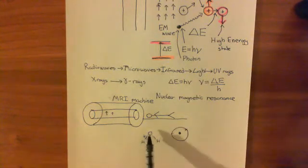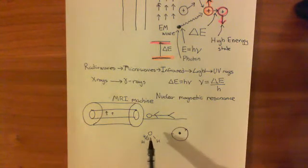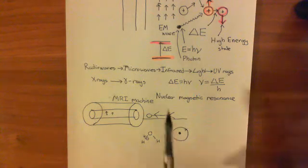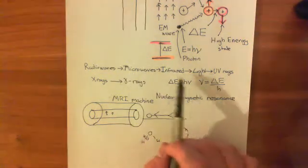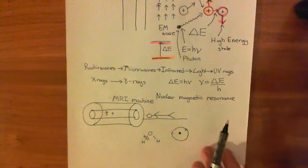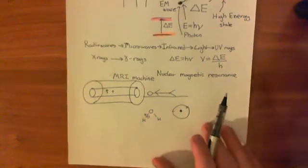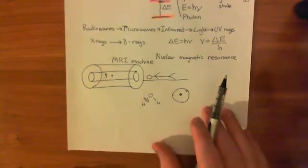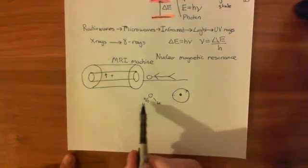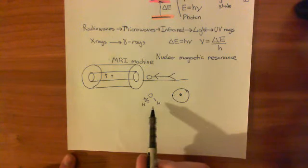You'll get this phenomenon of nuclear magnetic resonance — where the protons move to the higher energy state — at very low frequencies of electromagnetic radiation. The required frequency to make that transition occur is going to be a low frequency, which means it's very safe to use. Whereas for oxygen nuclei, because of the interactions with the neutrons and the protons, you need much higher frequency radiation, so we don't want to do it with oxygen.